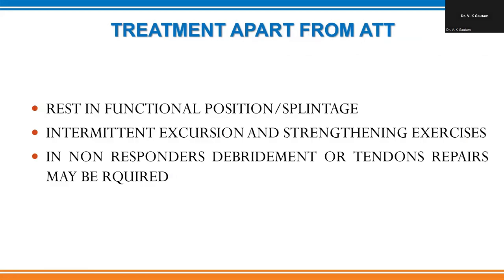For treatment, after confirming the diagnosis with CB-NAAT, anti-tubercular treatment is given — for a longer duration in extra-pulmonary tuberculosis. Rest in the functional position is important; without splintage, deformity can develop and hand function may be lost. As pain subsides, intermittent excursion and strengthening exercises should be given — for example, a silicone ball to squeeze to maintain grip strength. In non-responders where the organism is sensitive to rifampicin, open debridement may be done to remove all dead and necrotic material, followed by splintage and early physiotherapy.